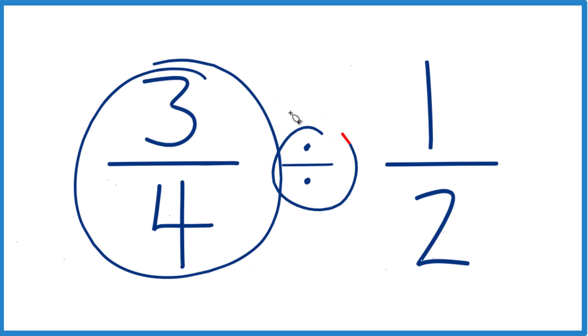Let's divide 3 fourths. We're going to divide 3 fourths by 1 half. Here's how you do it.